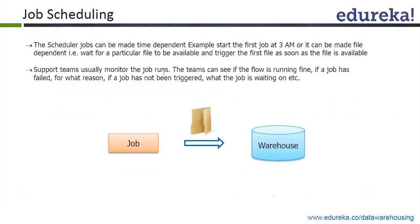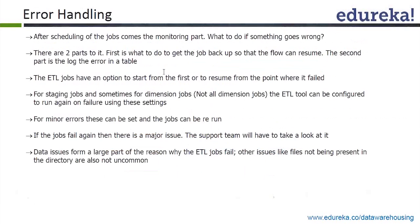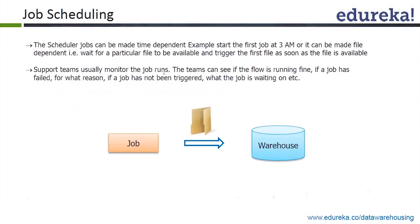What if the job fails and there is an important report to be generated the next day? You have to maintain the integrity of your system and availability of data to users at all times. There is always a support team looking into these jobs and job schedules, monitoring them using either control tables, email triggers, or manually checking the jobs every morning to see whether they finished correctly or not. So that is job scheduling.